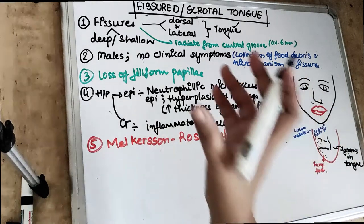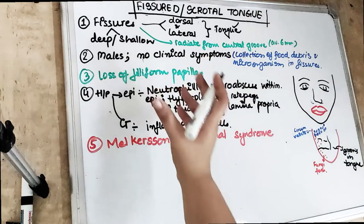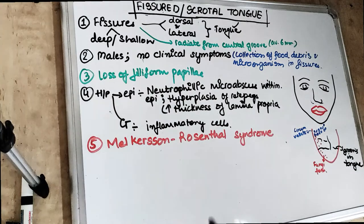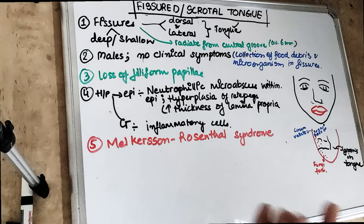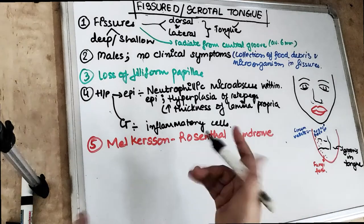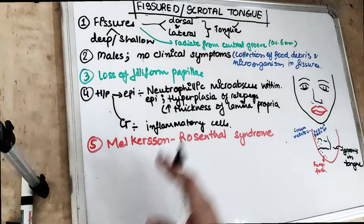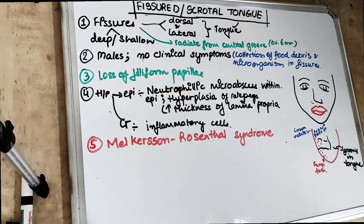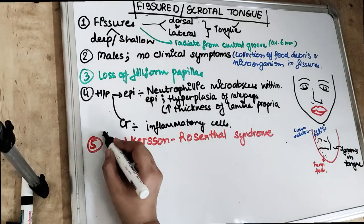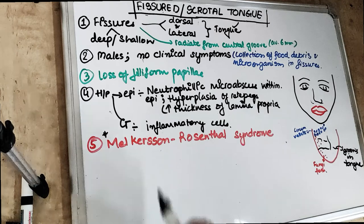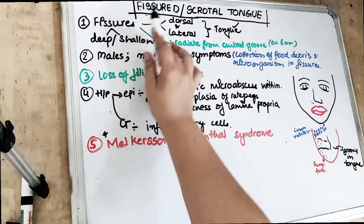The tongue in the case of fissured tongue is a kind of developmental malformation. It can be genetic, it can be due to vitamin deficiency or trauma, but the main etiology is unknown. We don't know what causes the fissured or scrotal tongue, except in the case of Melkerson-Rosenthal syndrome, which we will also cover.